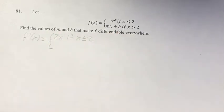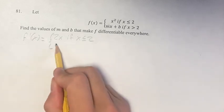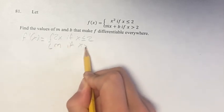Then we have this linear expression right here, so the derivative is just going to be the coefficient of the x term, which is m, if x is greater than 2.